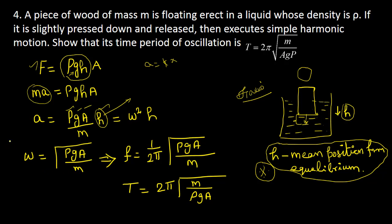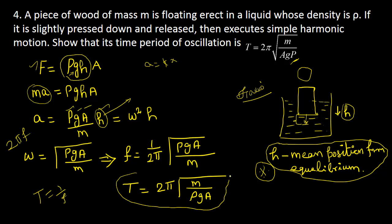Since omega equals 2 pi f, f equals omega divided by 2 pi, and T equals 1 by f. Therefore T is equal to 2 pi into square root of m divided by rho into g into A, where rho is the density of the liquid. This is the required relation.